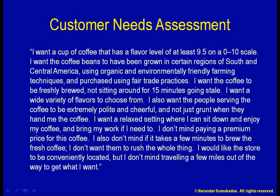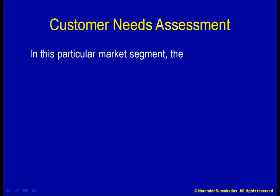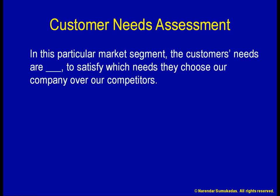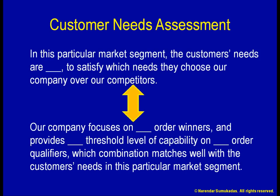Having a clear understanding of the customer's needs allows us to translate these needs into order winners and order qualifiers. One side of the equation is: in this particular market segment, the customer's needs are such and such, and to satisfy which needs, they choose our company over our competitors. The other side of the equation is: our company focuses on such and such order winners, and provides such and such threshold level of capability on such and such order qualifiers, which combination matches well with the customer's needs in this particular market segment.